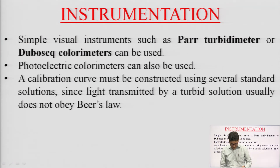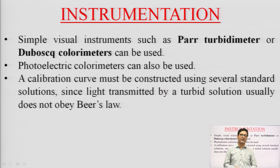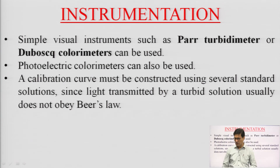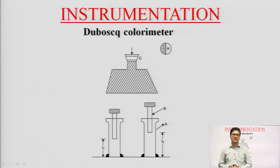For instrumentation, common basic colorimeters can be used for turbidity determinations, including the Duboscq colorimeter and photoelectric colorimeter. When performing these determinations, always prepare a standard calibration curve using different standard concentrations, then determine the unknown concentration by comparison.